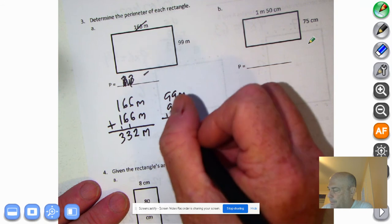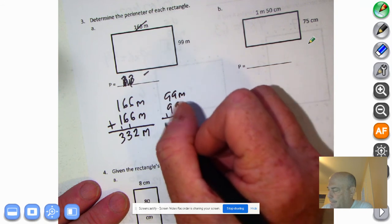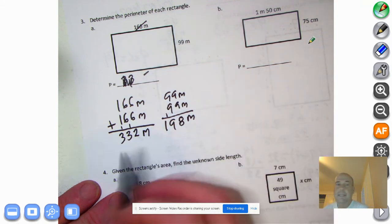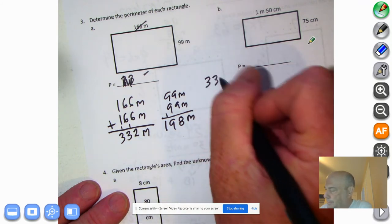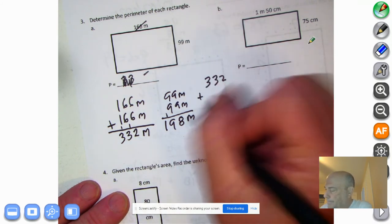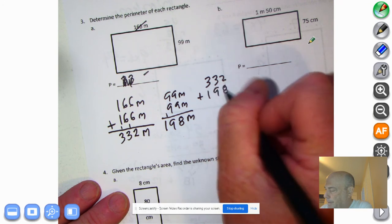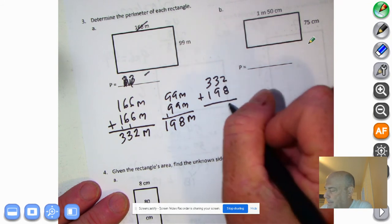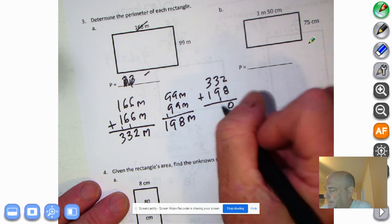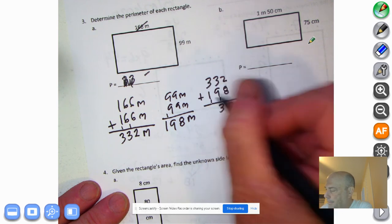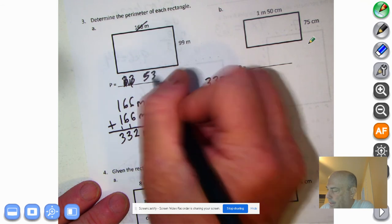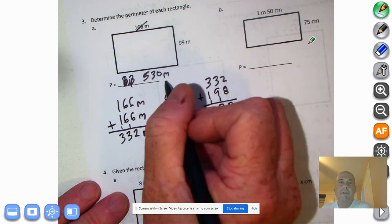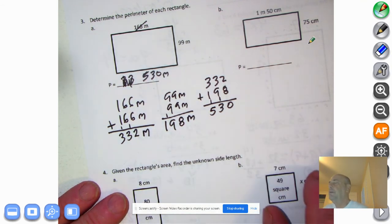Bring down our meters. Nine plus nine is 18. Bring down the one. Nine plus one is 10. Plus nine is 19. So now we're still not done yet because we have to add these two together. Two plus eight is 10. Nine plus one is 10. Plus three is 13. Three, four, and 530. And that is our answer. Remember, you just can't put 530. We've got to put the meters down. All right. Let's keep going.